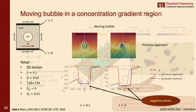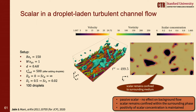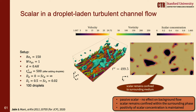We also look at a more complex test case of scalar transport in a droplet-laden turbulent channel flow at Reynolds number 150, Weber number 1, starting with 100 droplets. The scalar diffusivity is finite in the surrounding medium and zero inside the droplets (infinite Schmidt number inside the droplets). We confirm that the scalar remains confined to the surrounding medium even after the droplets undergo complex breakup and collisions, and that positivity of the scalar concentration is maintained throughout the simulation.